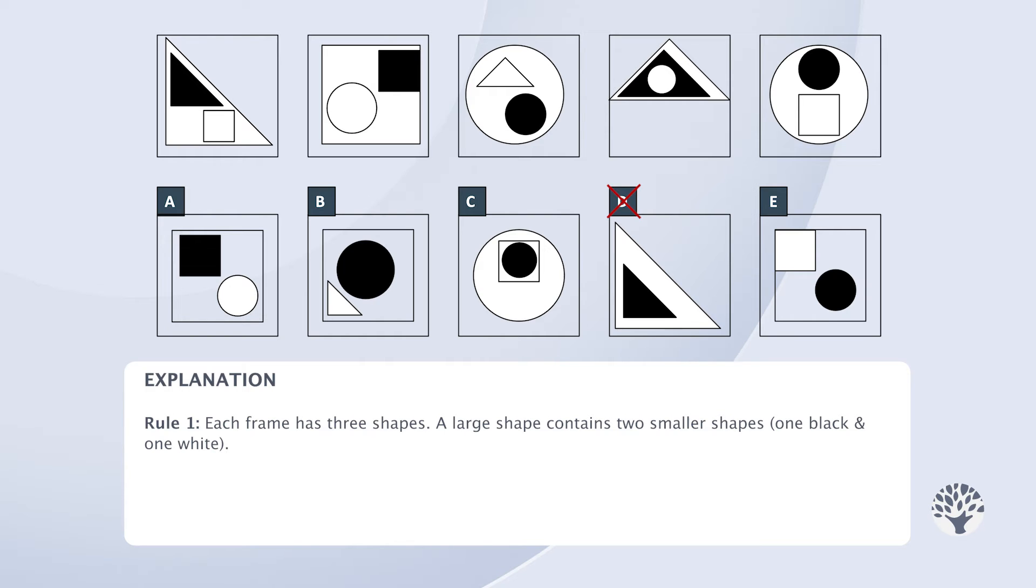When we have a closer look, we find that the small black shape is the same as the large white shape in each frame. That's our second rule.